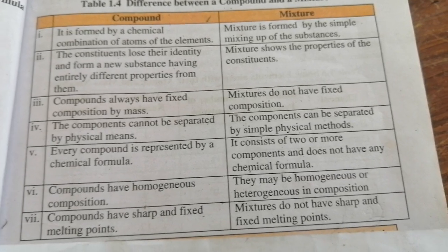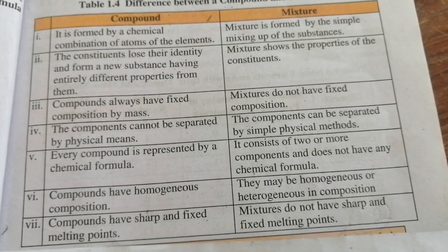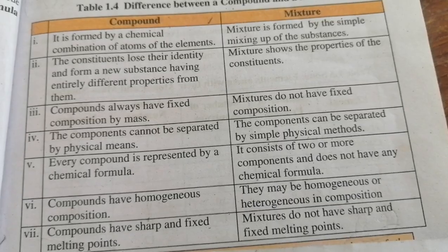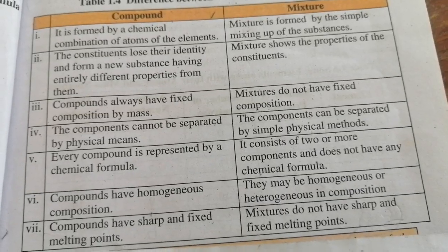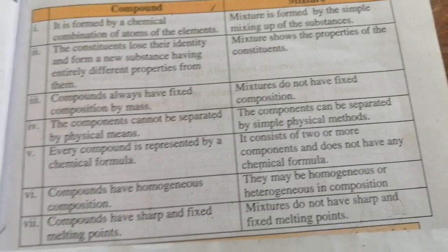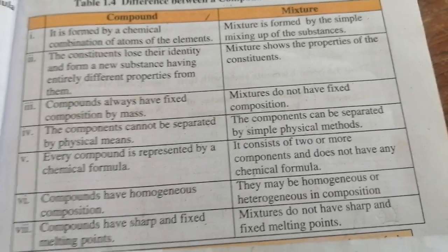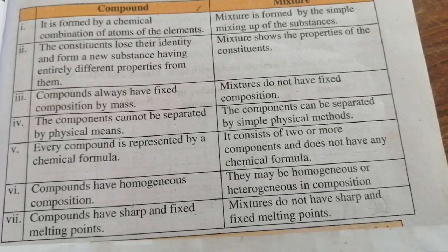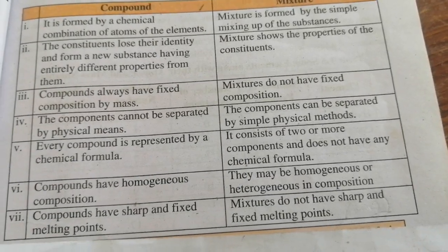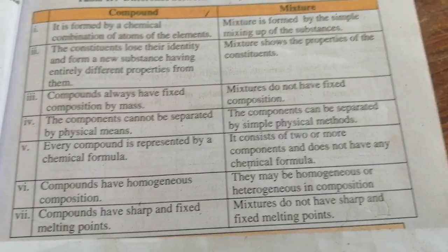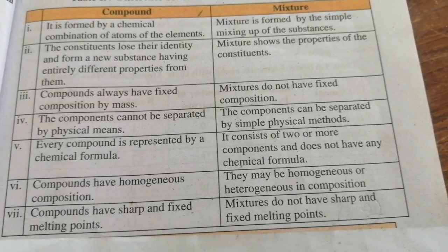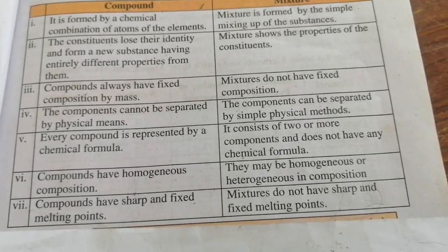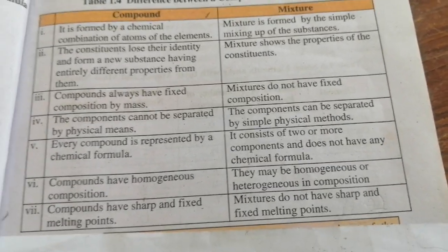The compound is made by chemical combinations. The mixture is made by combining simple substances. For example, if you are making a fruit chart, you will mix simple fruits — that is how a mixture is made.